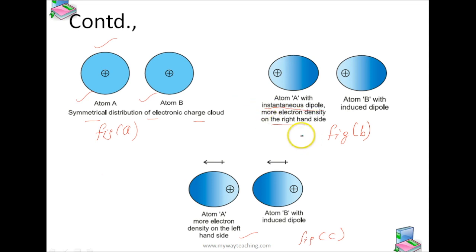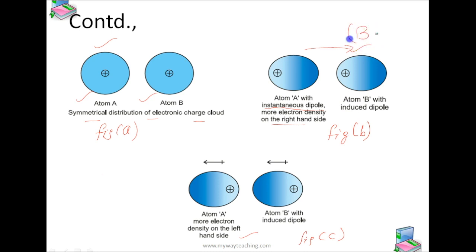This results in the development of an instantaneous dipole on atom A for a very short time. This instantaneous or transient dipole distorts the electron density of the other atom B, and as a consequence a dipole is induced in atom B also. The temporary dipoles of atom A and B attract each other. This force of attraction was first proposed by the German physicist Fritz London, and for this reason these are known as London forces. Another name for this force is dispersion force. These forces are always attractive.